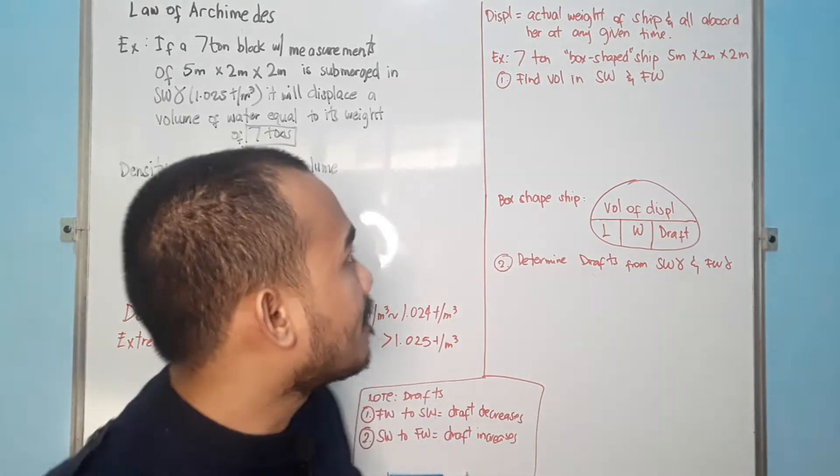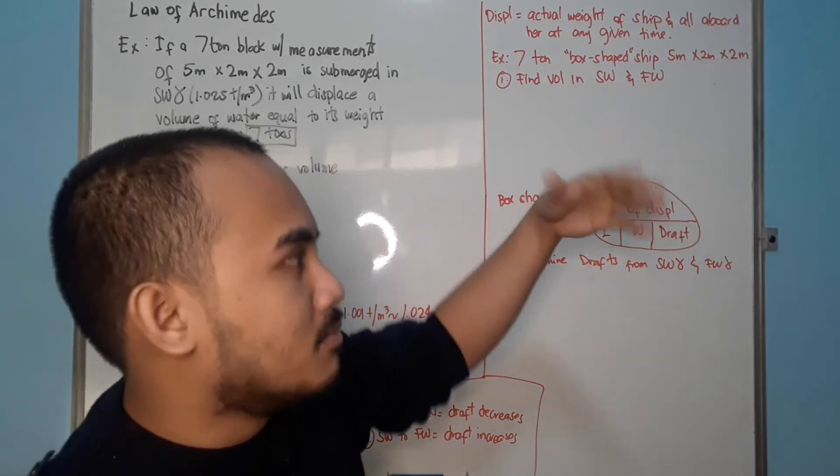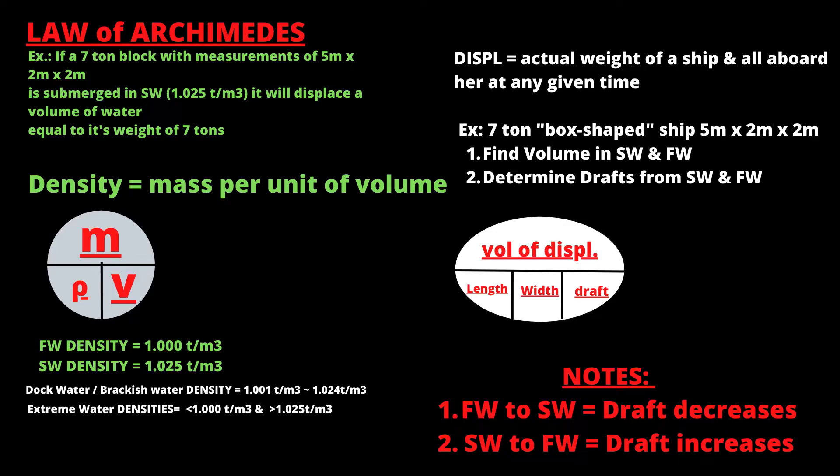Example is 7-ton box-shaped ship with the measurements of 5 meter by 2 meter by 2 meter. You have to find the volume in salt water and fresh water.